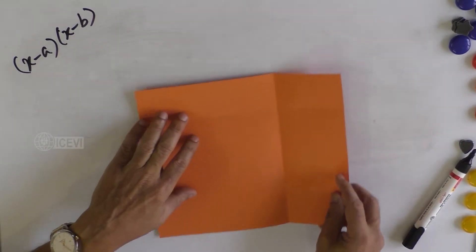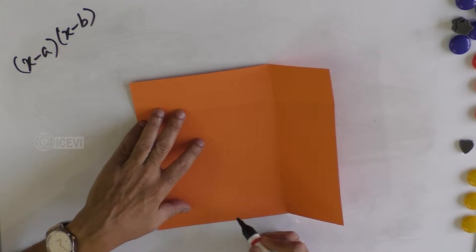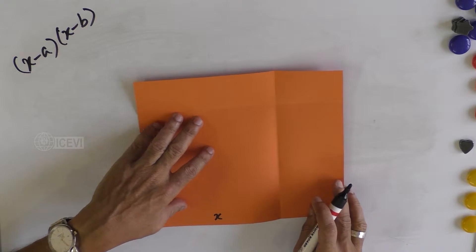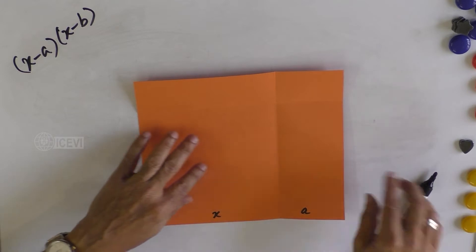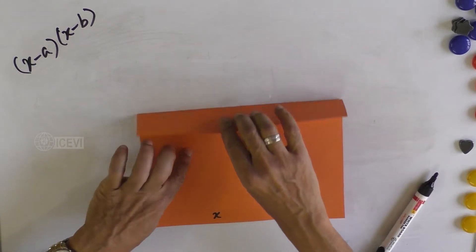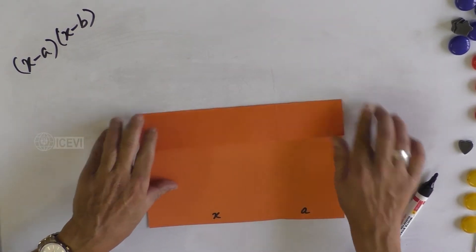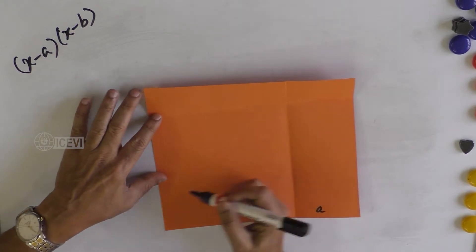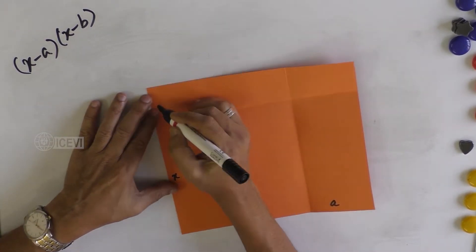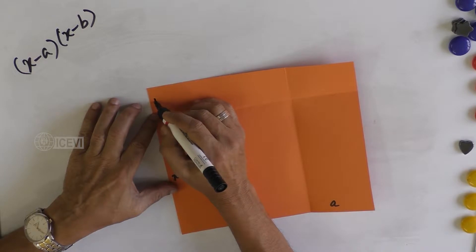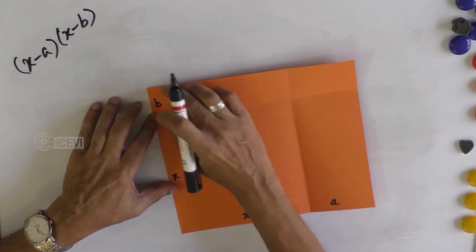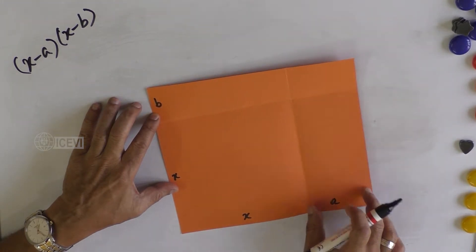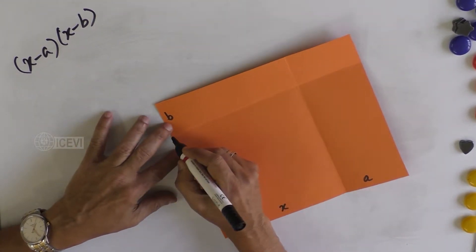Fold vertically to get two segments - one segment is X, another segment is a. Then fold the paper horizontally in such a way that the long segment is X and the short segment is B. The two short segments are not of the same size - one is bigger than the other.